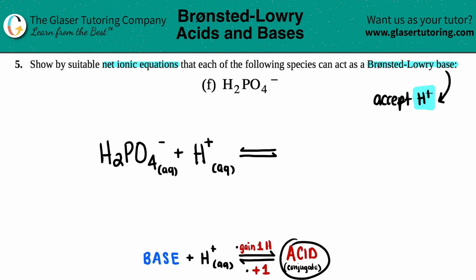Now we just got to find out that conjugate acid. Well, all you got to do is just gain one hydrogen and then add a plus one to the overall charge. So in this case, I had two hydrogens, but since I'm adding one more, I won't have two. I'll have three. So basically, it would just be H₃PO₄.